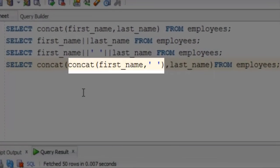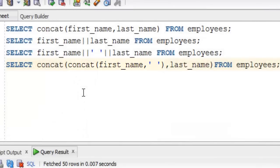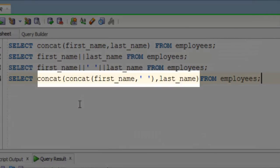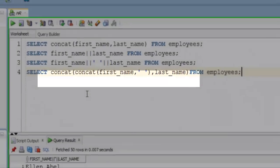Inner Concat function has two parameters: first, column name first_name, and an empty string which will be a space between first name and second name. This Concat will now return a string which is the first name with space. This returning string will be the first input of our outer Concat, and column last_name will be the second input.